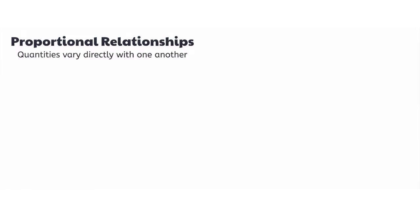Let's talk about proportional relationships. A proportional relationship between two quantities is one in which the two quantities vary directly with one another. For example, if you are buying apples and each apple you buy is always 50 cents, then the cost of apples varies directly with the number of apples you buy.